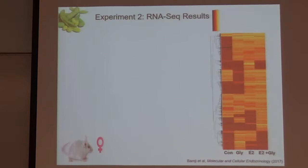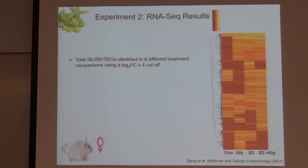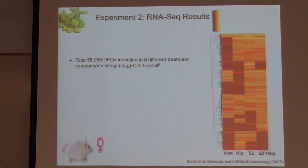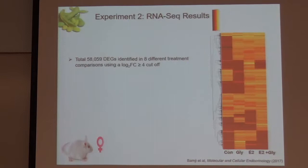From the RNA sequencing, we identified 58,059 differentially expressed transcripts — not genes. Transcripts differ from genes in that a single gene can be spliced in many different ways to produce different transcripts. Since the whole mouse genome has only about 23,000–25,000 genes, there is no way we found 58,000 genes; these are transcripts. Because we had an N of 1 per treatment group, there were no p-values to rely on, so we used a fold change cutoff of ≥4 — meaning a gene had to be four times higher in expression in one group versus another to be considered differentially expressed.